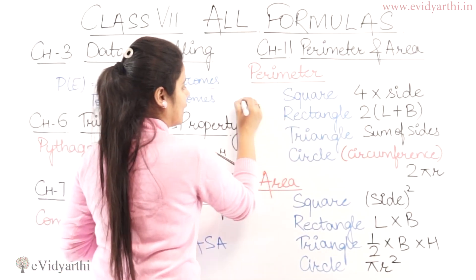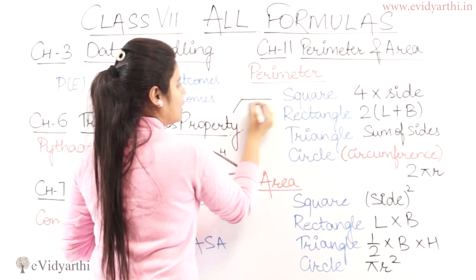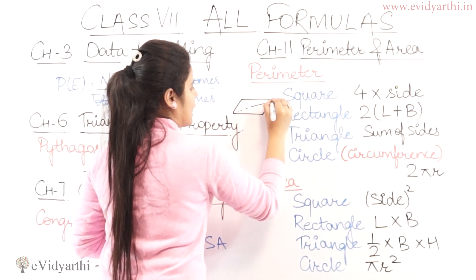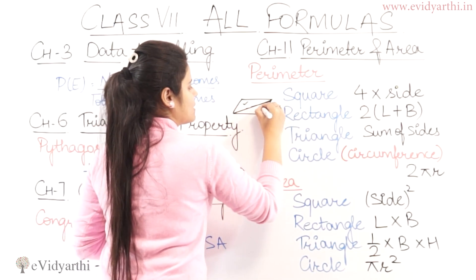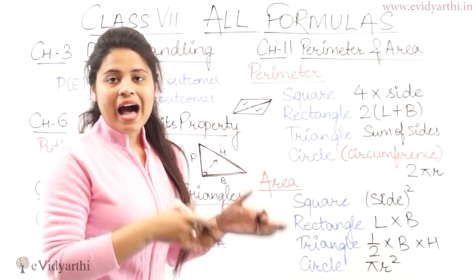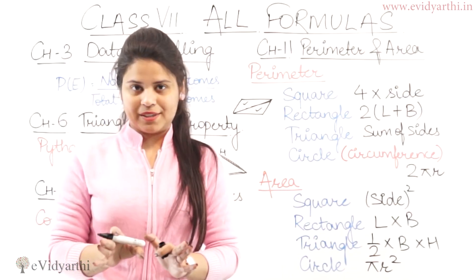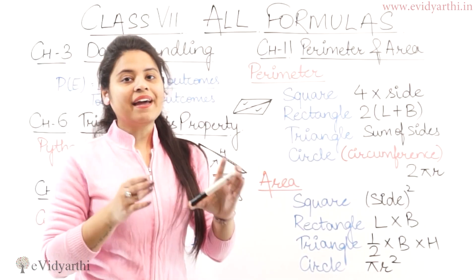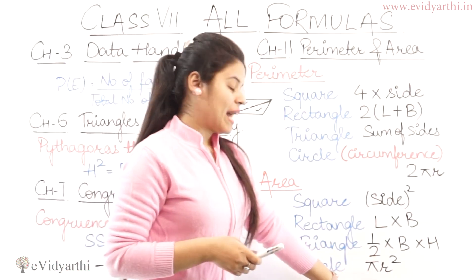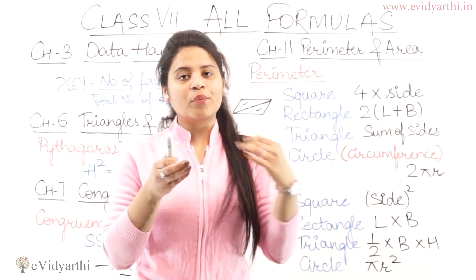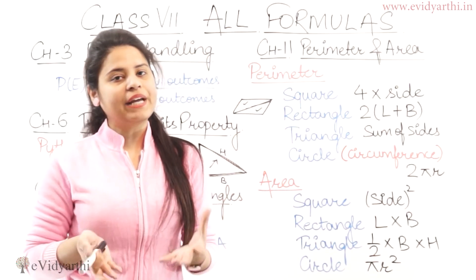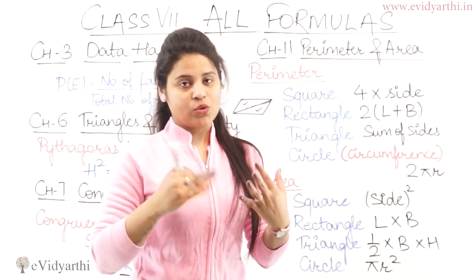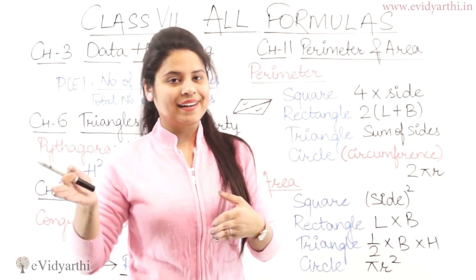And if you have a parallelogram, it has a diagonal — you can divide it into two triangles. So you can do half into area of parallelogram. Then we have circle: area of circle is πr², where π is 22/7 or 3.14, and r is the radius, so r² means radius into radius.